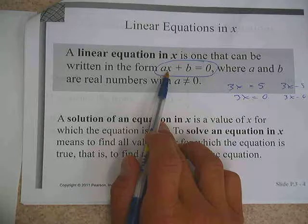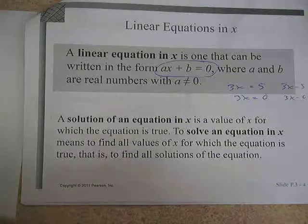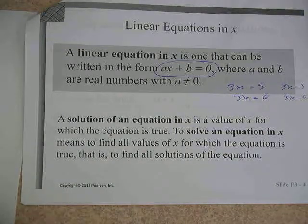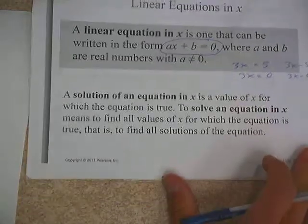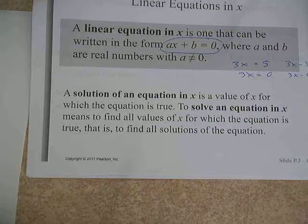And the other thing that can't happen is you can't let that a be zero. Because if a was zero, what would happen to your x that you just had? It would be gone. Zero times x would be zero. There wouldn't even be a variable, so therefore it wouldn't be linear.